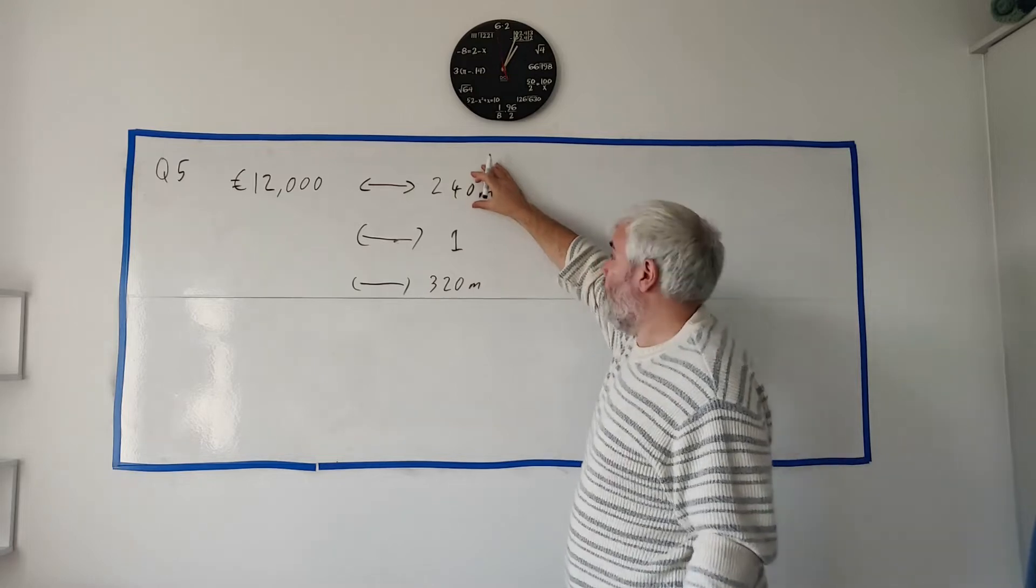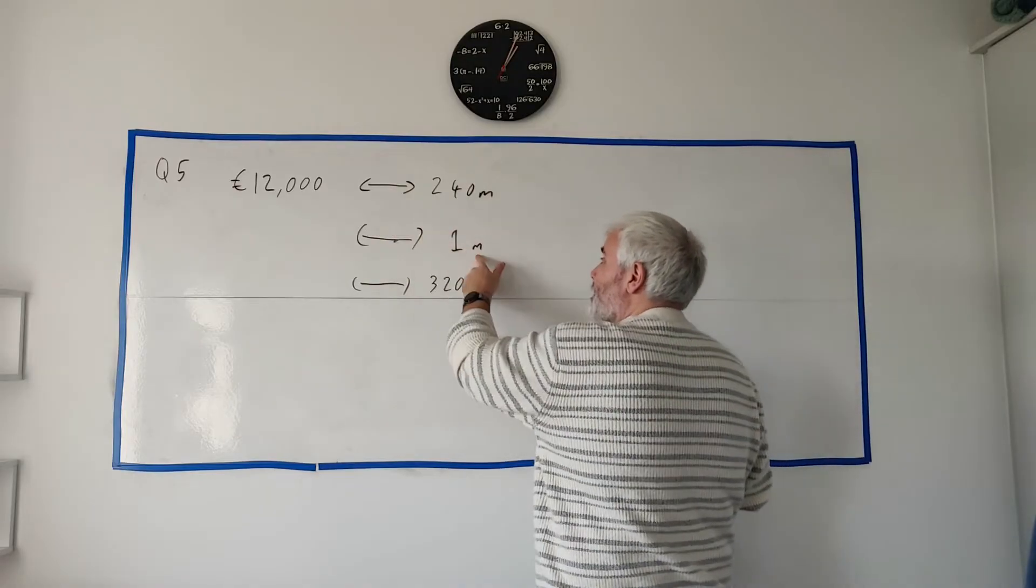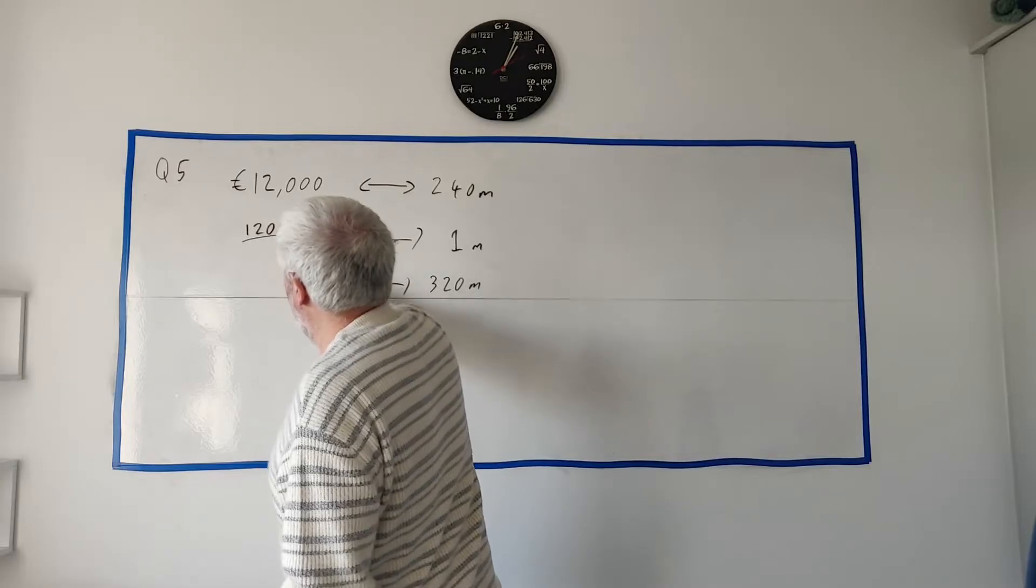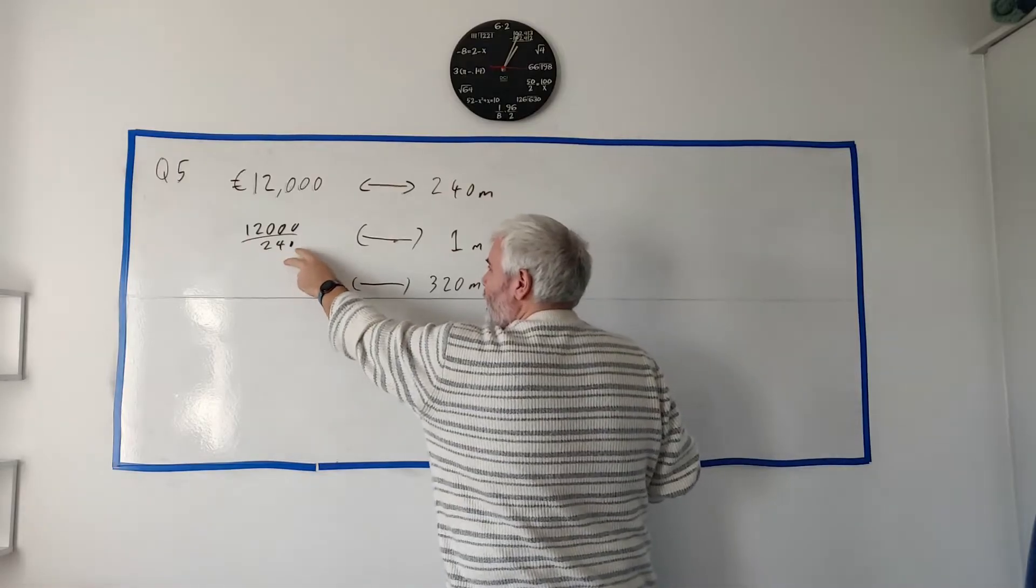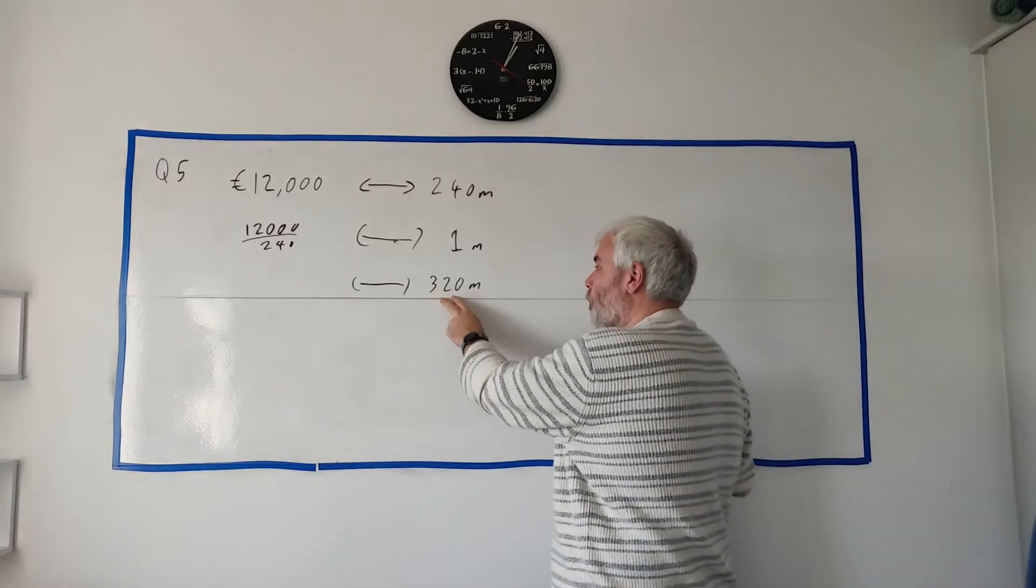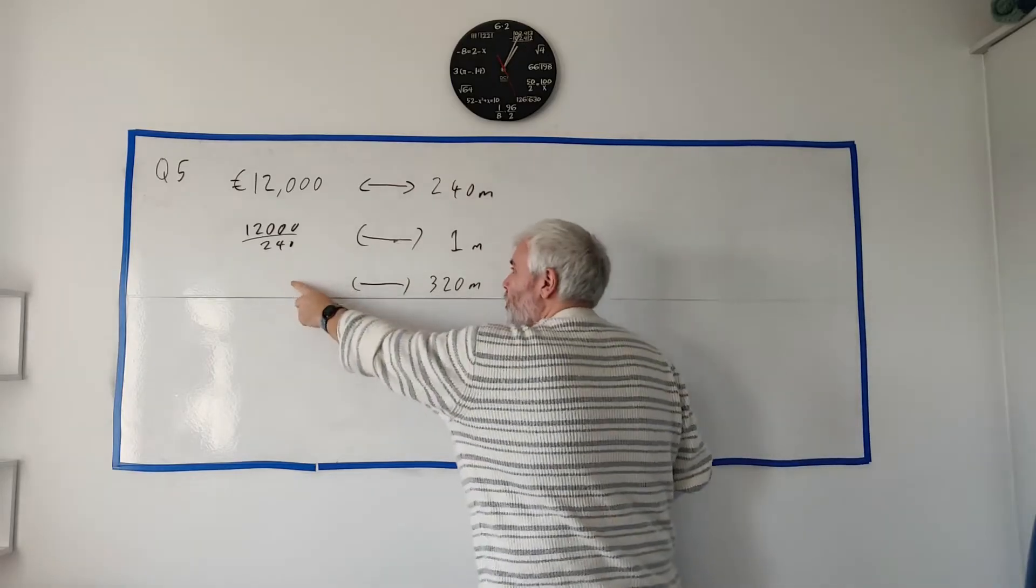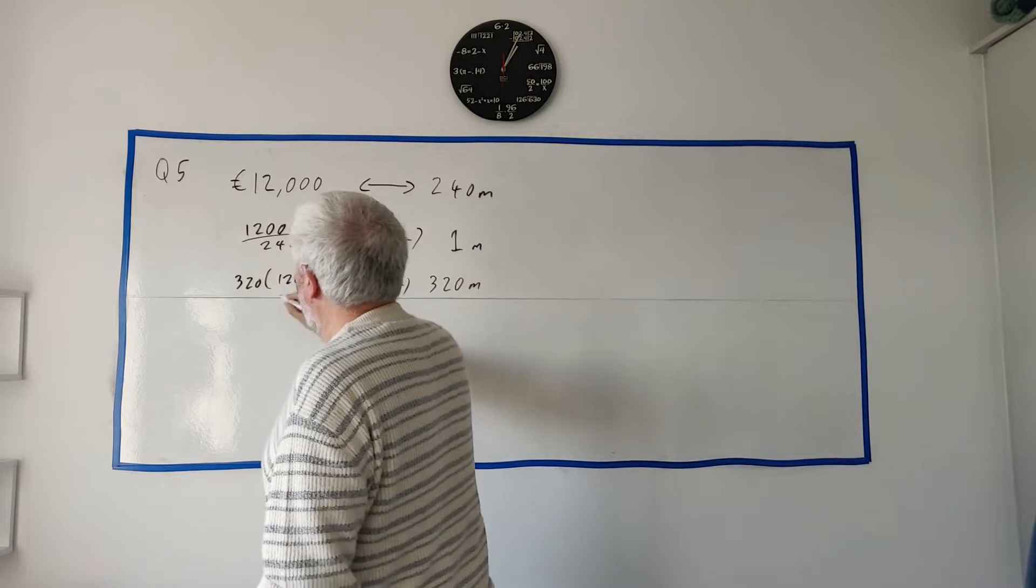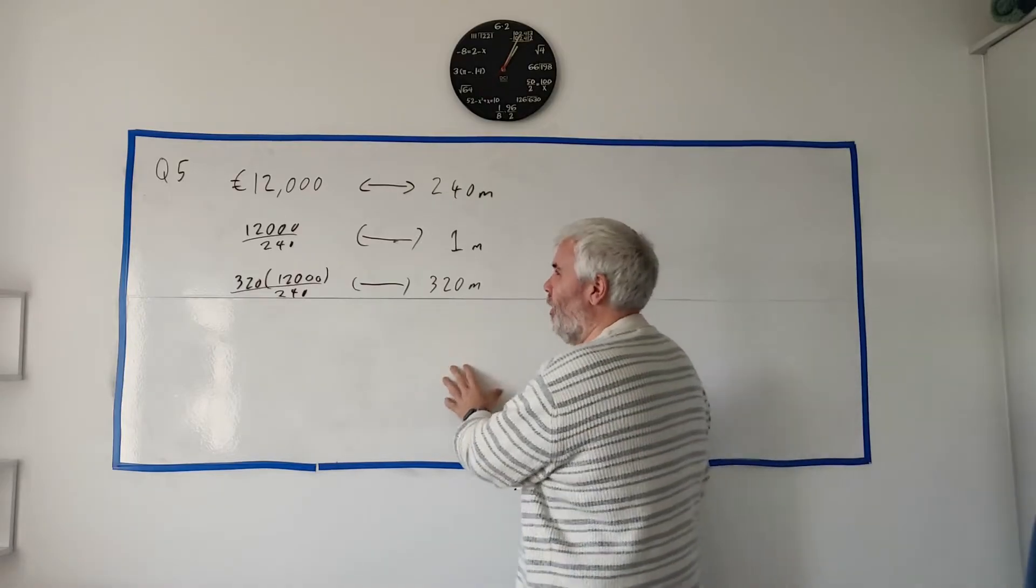To get from 240 to one we just divide by 240. If we're going to divide this side by 240 we better do it to that side. So we get 12,000 divided by 240. Then to find out how much it would cost to go 320 meters we just multiply one by 320, so we get 320 multiplied by 12,000 divided by 240.